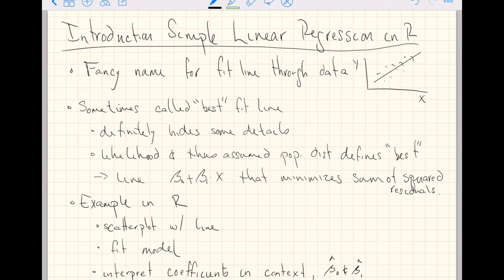So here, this line, beta naught plus beta 1 times x, is going to be the line that minimizes, and then here's another term you might see, the sum of squared residuals. So this video will first show us what the likelihood is going to be all about for the most commonly assumed population distribution. We'll look at the line in terms of the likelihood and in terms of this phrase sum of squared residuals, so that we can get an understanding of what that phrase means.